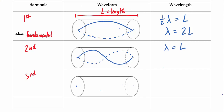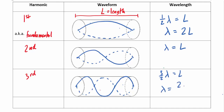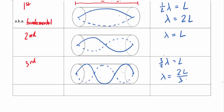For the third harmonic, we still have a node at each end but now two additional nodes in the middle. The pattern fits three halves of a wave into the length L, which means the wavelength equals 2L/3: λ = 2L/3.